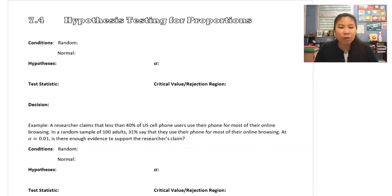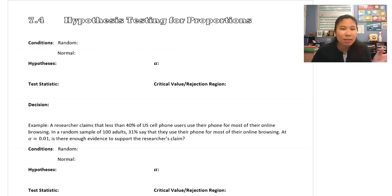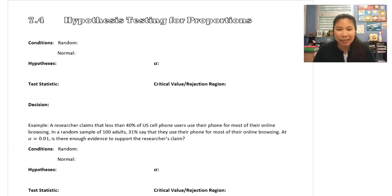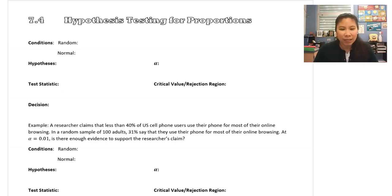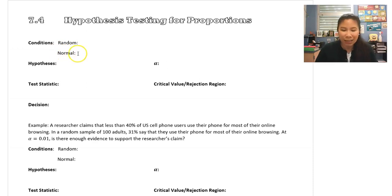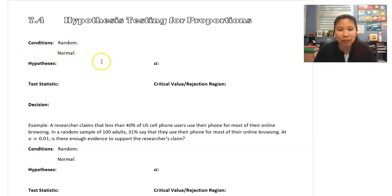If you remember last chapter when we were doing our confidence intervals, we had formulas for confidence intervals for means, and then we switched formulas when we dealt with proportions. Same thing today — we're going to have different formulas and slightly different things that we have to check for. When we started out our hypothesis test, we always looked to see whether our problem said it was a random sample, and whether our sample size was big enough to count as normal, or if it said normal somewhere in there.